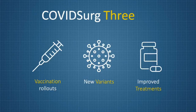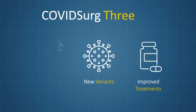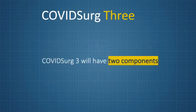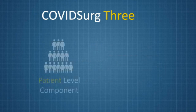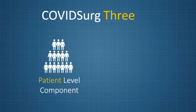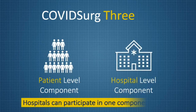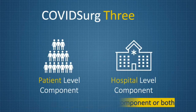We therefore need renewed data to guide ongoing global practice. COVID Surge 3 will have two components: a patient level component and a hospital level component. Hospitals can participate in one component or both.